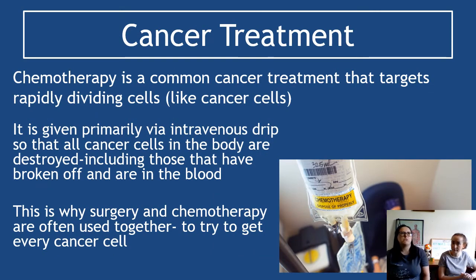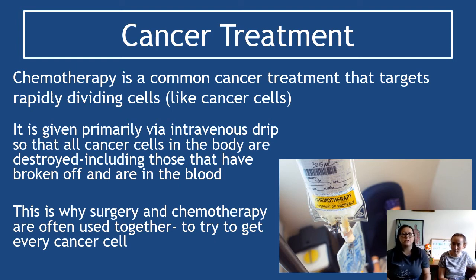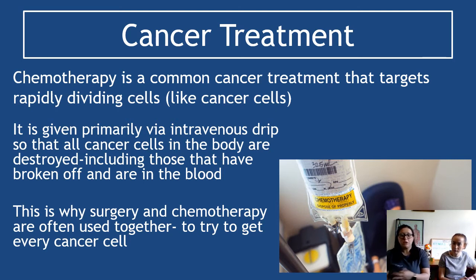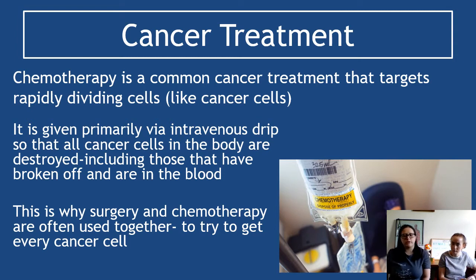Everything about cancer is designed to evade your body — it hides from the immune system, it can travel through blood, and if one cancer cell survives it has the potential to keep the cancer going. Chemotherapy is a common treatment that targets rapidly dividing cells. It's given via an intravenous drip so chemicals travel through the blood killing cancer cells. This is why surgery and chemotherapy are used together: surgery removes the tumour, but chemotherapy kills any cells that have broken off and are floating in the blood.